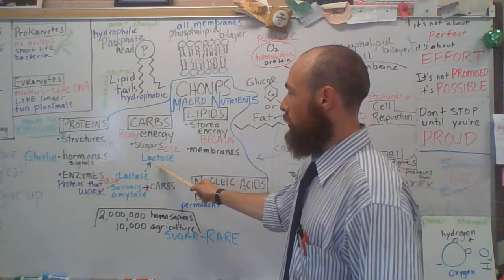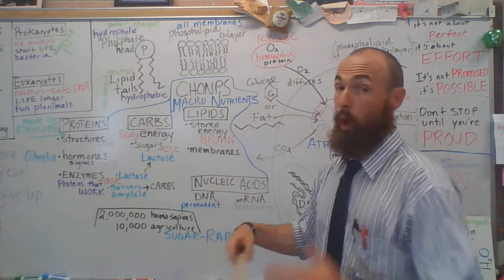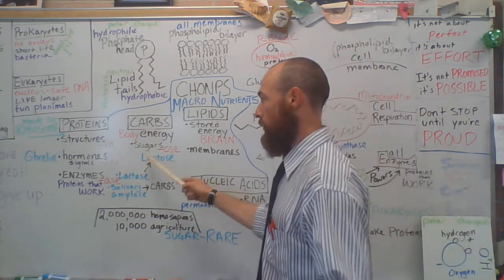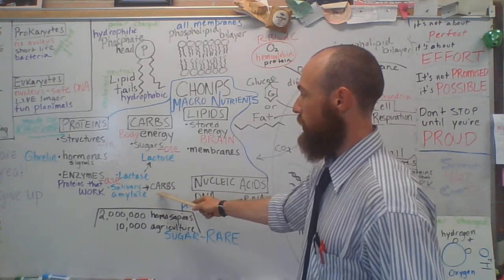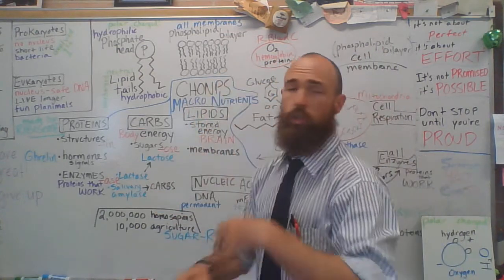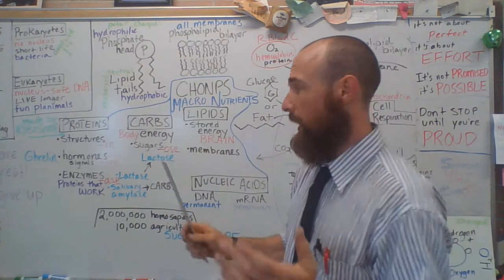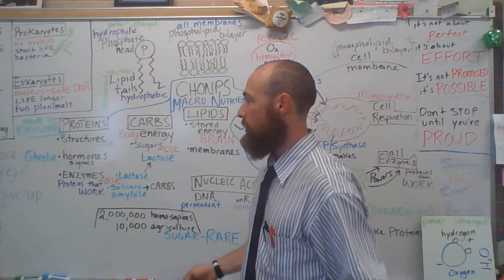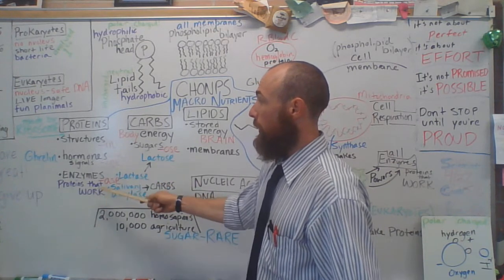Now, I said the carbs, sugars specifically, are broken down by enzymes. Enzymes do all sorts of work, specifically, you know, here lactase breaks down lactose, salivary amylase breaks down carbs, but there are tons of other enzymes. They are the things that do all of the work inside of the cell. So we're breaking things down and making things. We make things, we break things down. That's pretty much what happens inside of the cells. We can all boil it down to that, and that's done by enzymes, which are proteins that work.